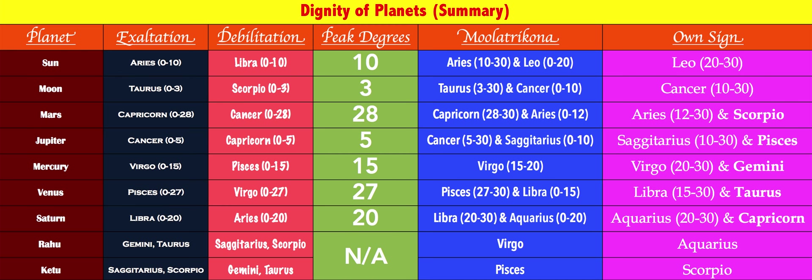Mercury in Virgo is notable because Mercury is the only planet that gets exalted in one of its own zodiac signs — no other planet does this. In 0 to 15 degrees of Virgo it reaches peak exaltation, and in Pisces 0 to 15 degrees it reaches peak debilitation. Within Virgo itself, 15 to 20 degrees is its moolatrikona — a very small 5-degree window. Virgo 20–30 and the entire sign of Gemini are its own sign.